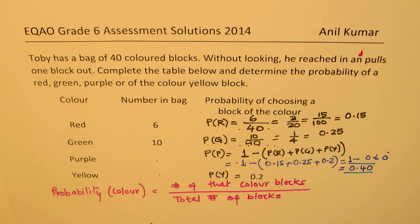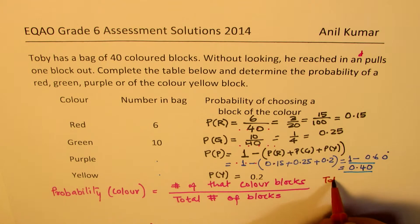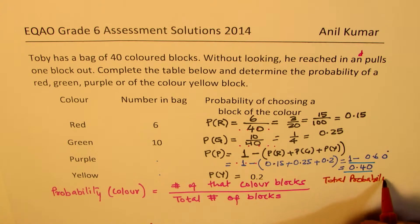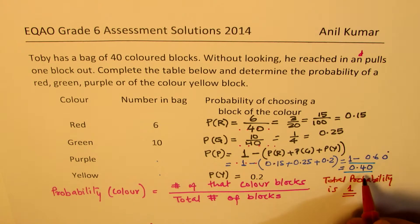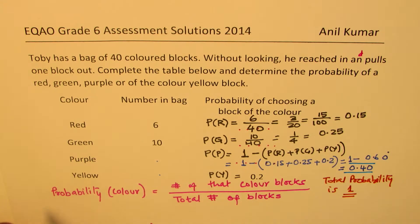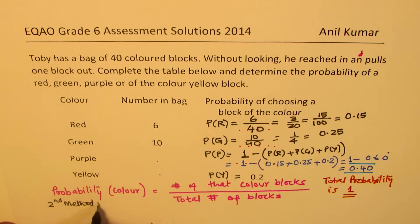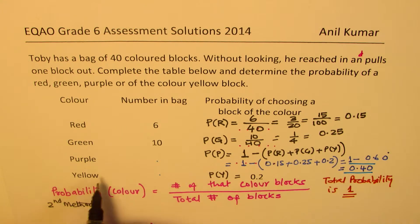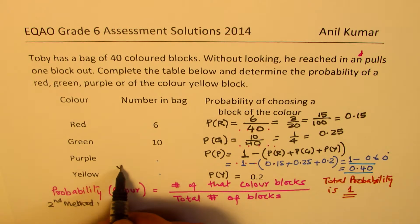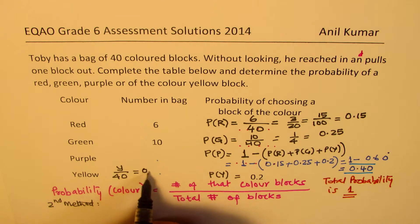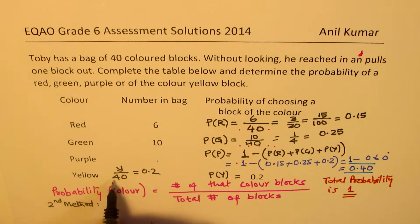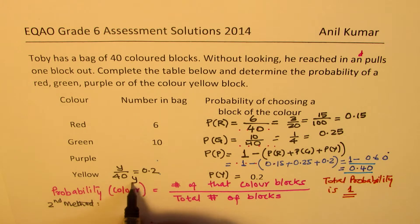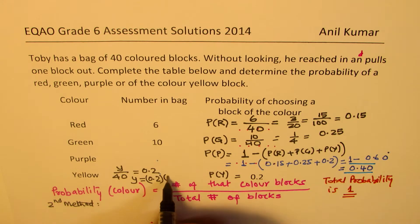Now let us use method 2, which is more common. In the second method, we'll actually find how many of each type of block there are. When we know the probability of picking yellow is 0.2, that means yellow blocks over 40 should equal 0.2. From here, we can find y is equal to 0.2 times 40.